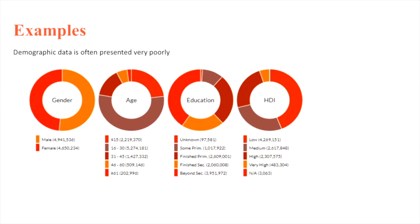One thing I see often very poorly presented is demographic data. I pulled this off a random website where they break down people by gender, age, education, and human development index. Can somebody tell me what the biggest age group is here? 16 to 30. Can you tell me roughly how many — are they half? About just over half. And can someone tell me the highest level of education, the biggest group? The colors are too similar to distinguish.